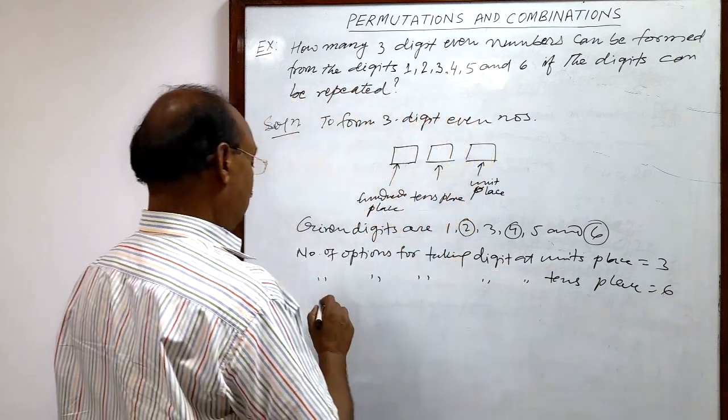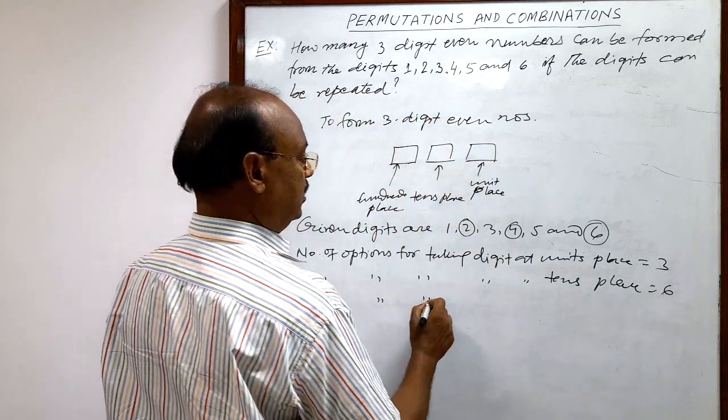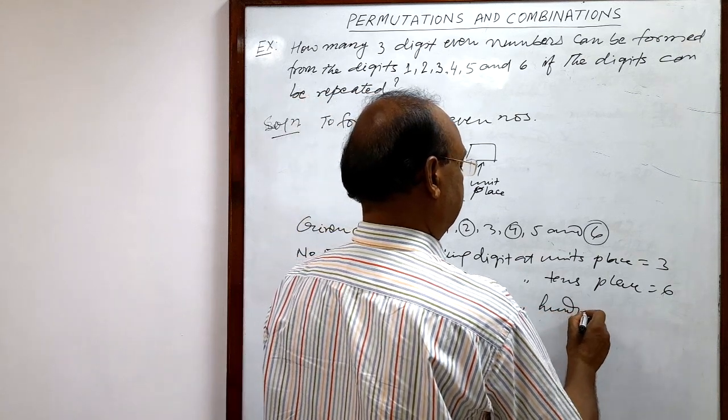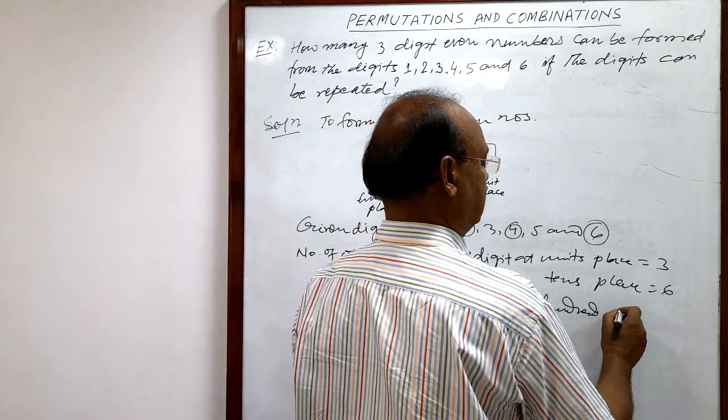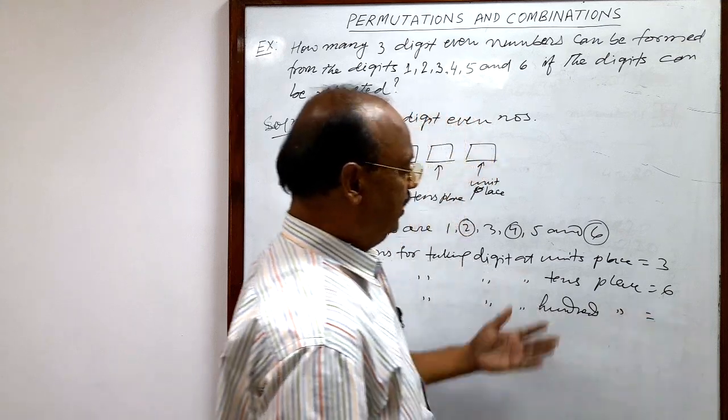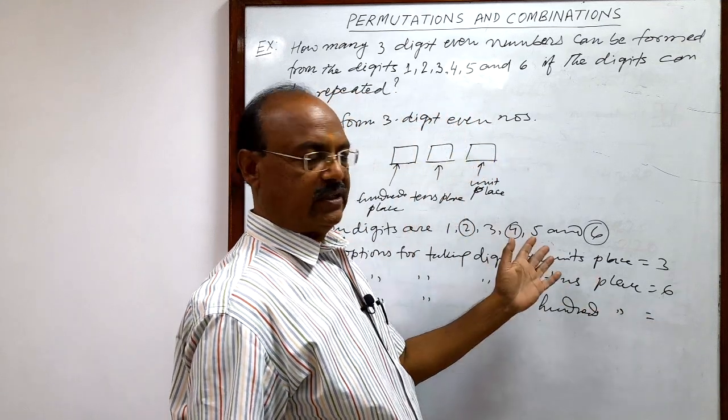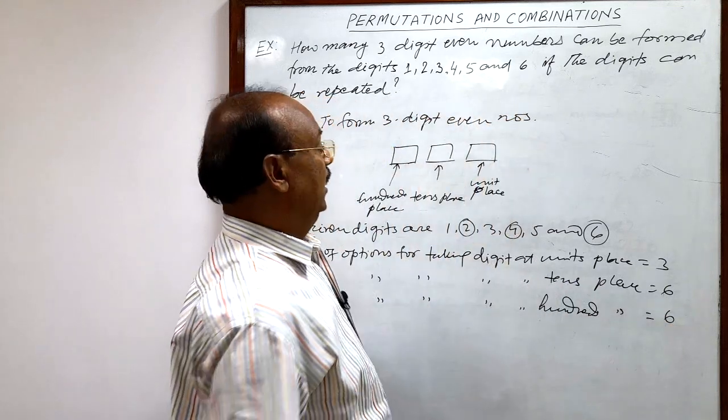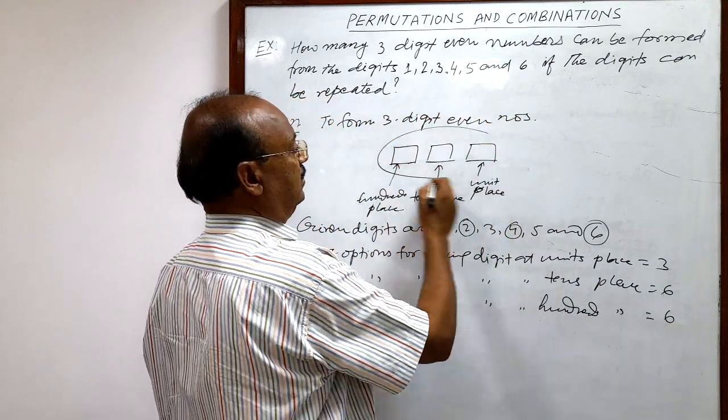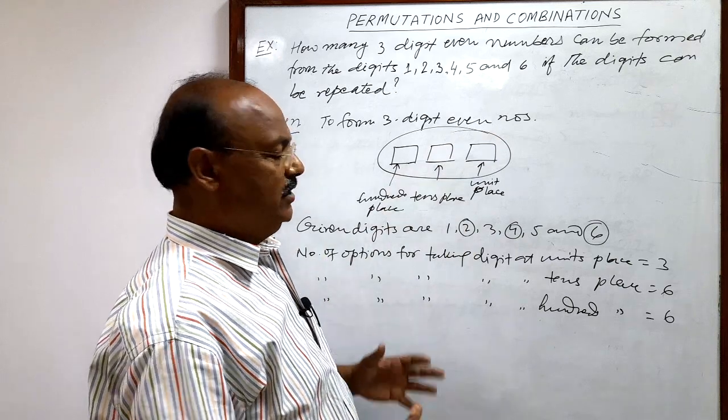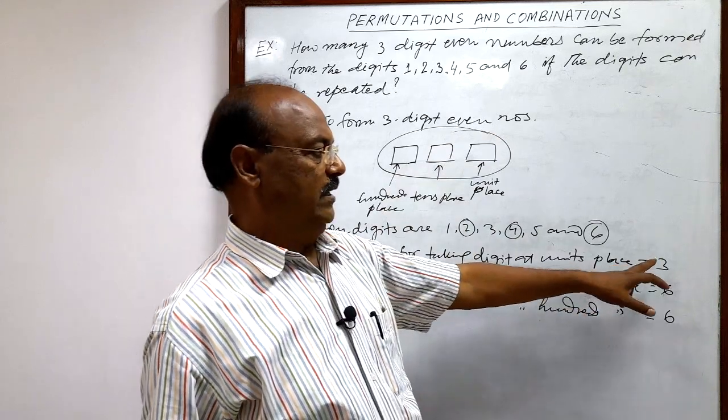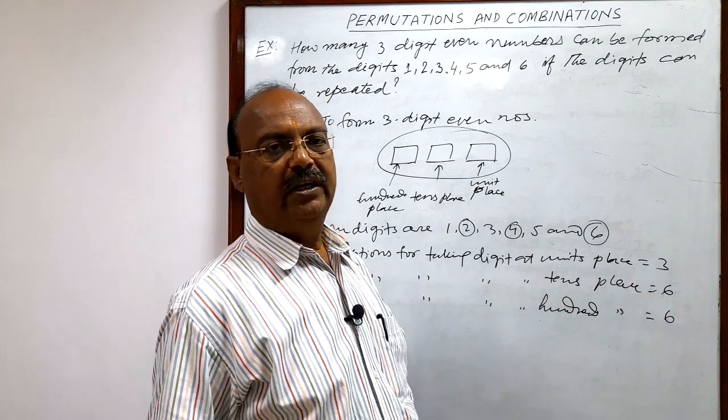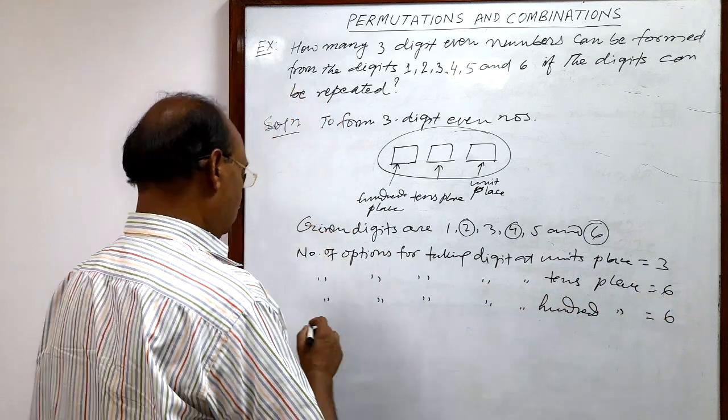Similarly, number of options for taking digits at hundreds place, hundreds place. Again, anyone out of this six can be selected. So six. And the entire selection forming three digit even numbers, we have to multiply three into six into six by fundamental principle of counting.